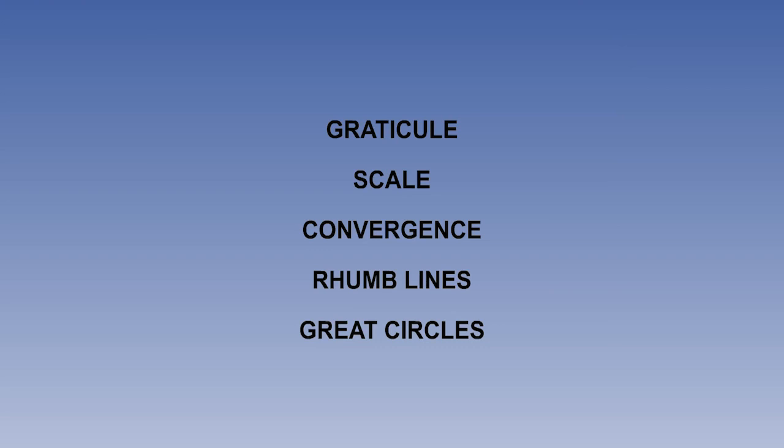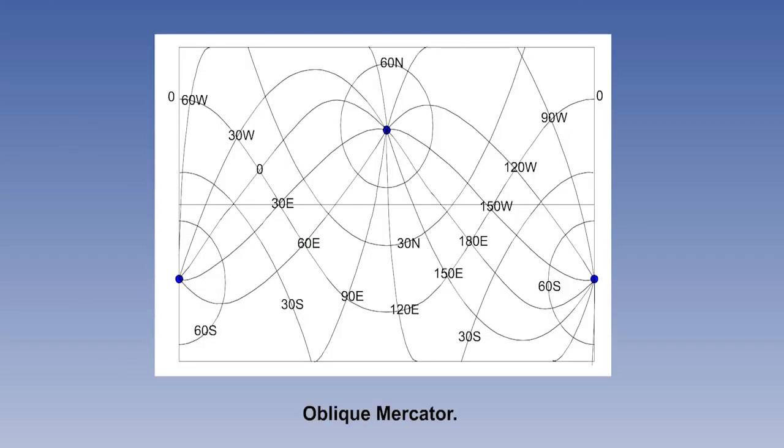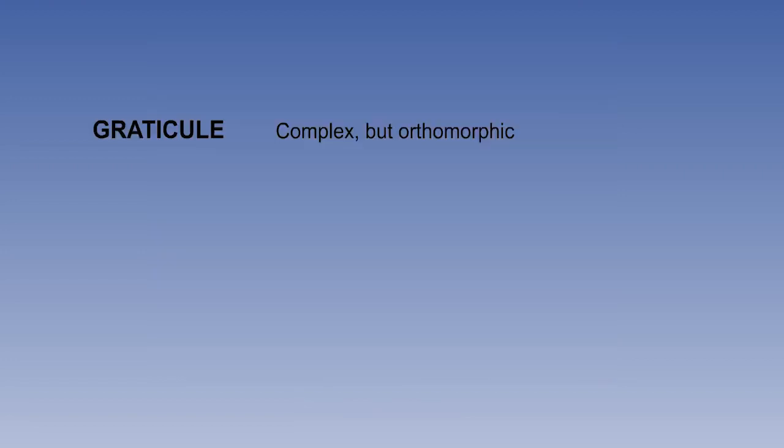We will now examine the chart properties in the usual way. This is the list which is of interest to us. We will start with the graticule. It is, as we have already described, complex and apparently irregular, but in fact orthomorphic.